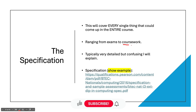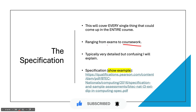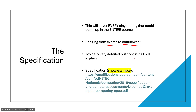The specification covers every single thing that could come up in the entire course — from exams to coursework. For coursework, it highlights every word, bullet point, and important topic you need to learn. For exams, it gives you the topics that could come up on the paper. It's typically very detailed but can be confusing — I will explain. The specification is here and I'm going to quickly show you one of the units.